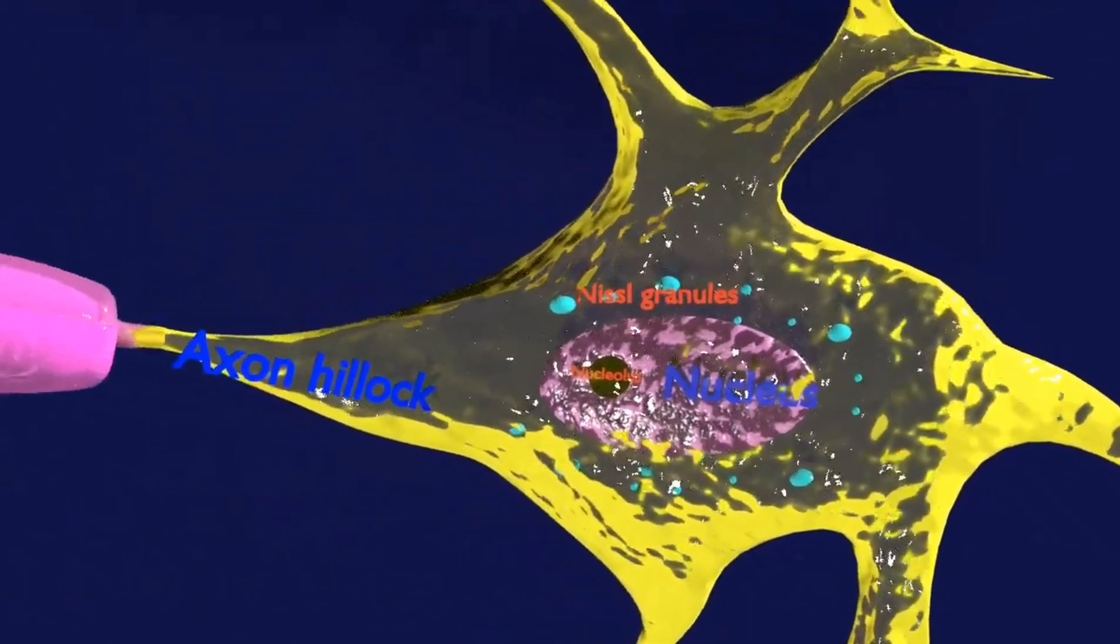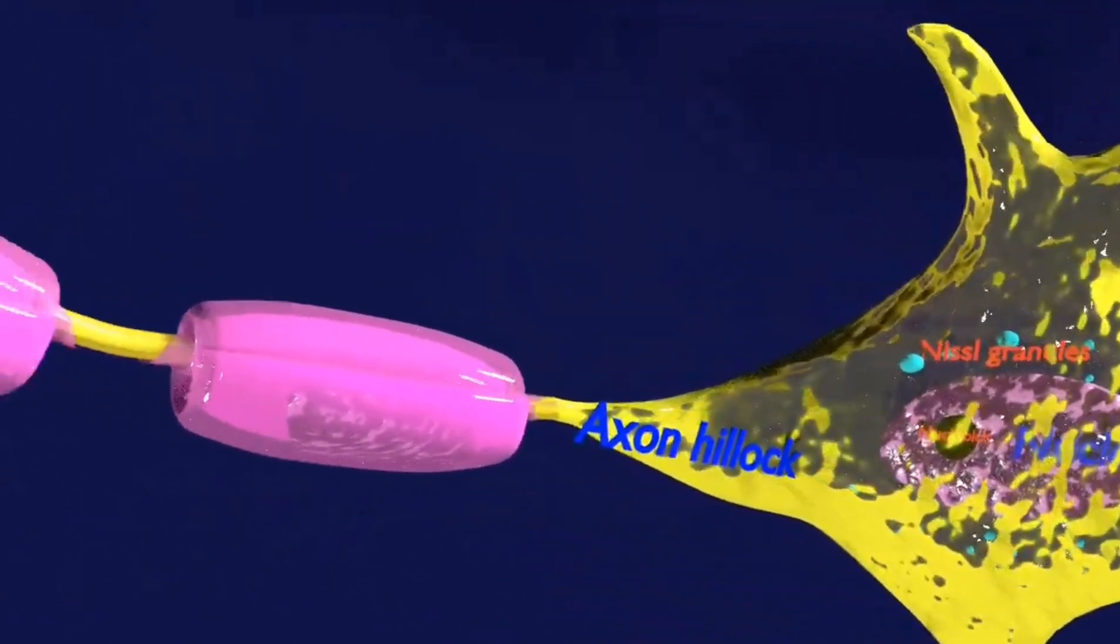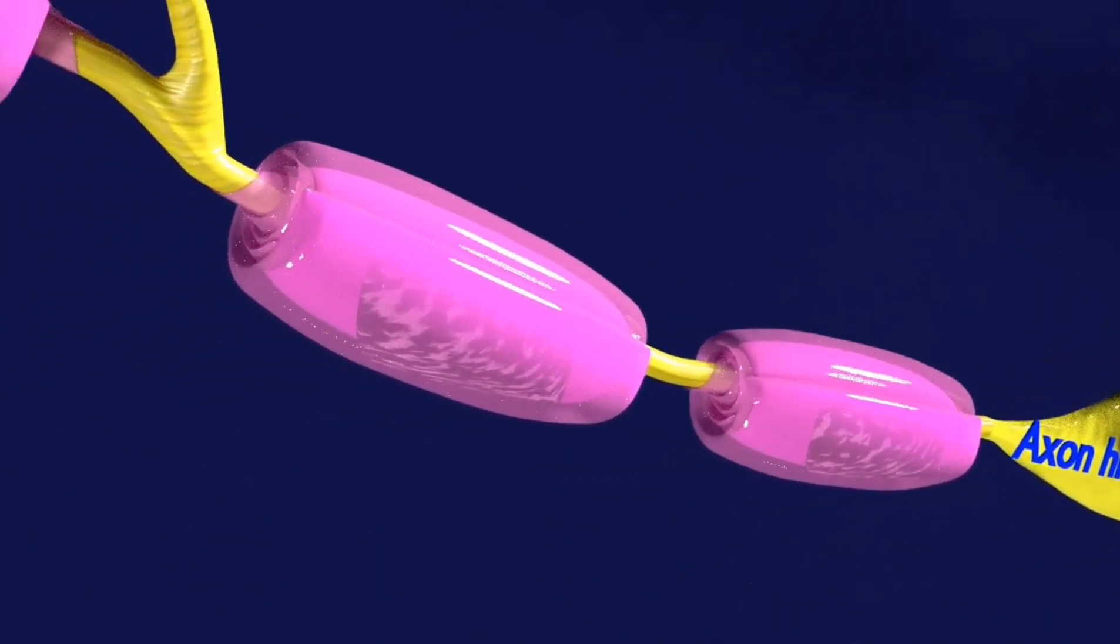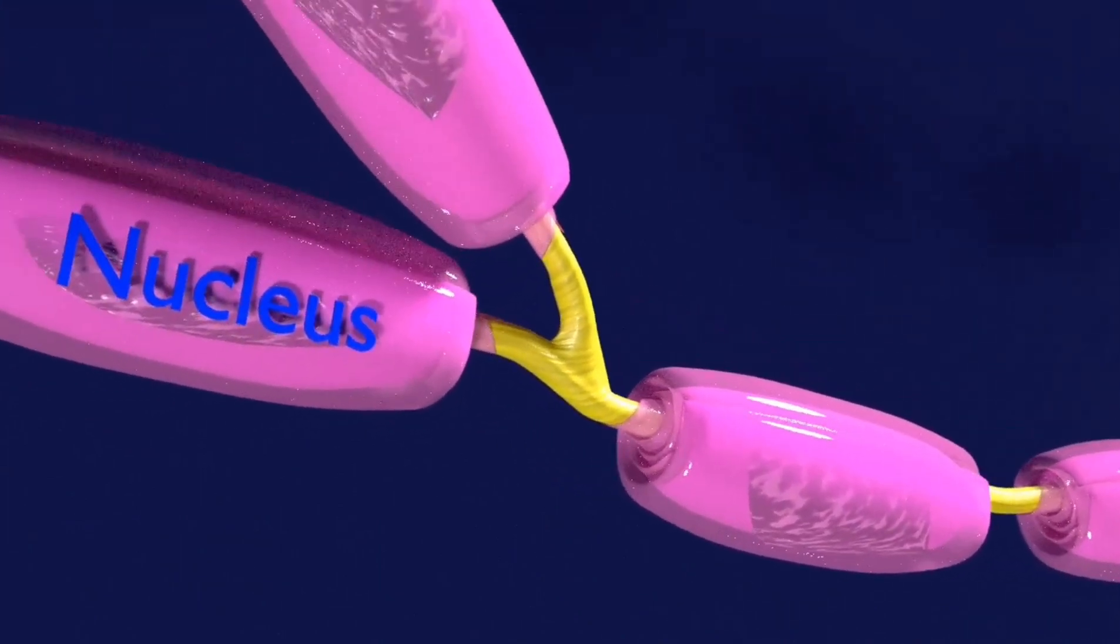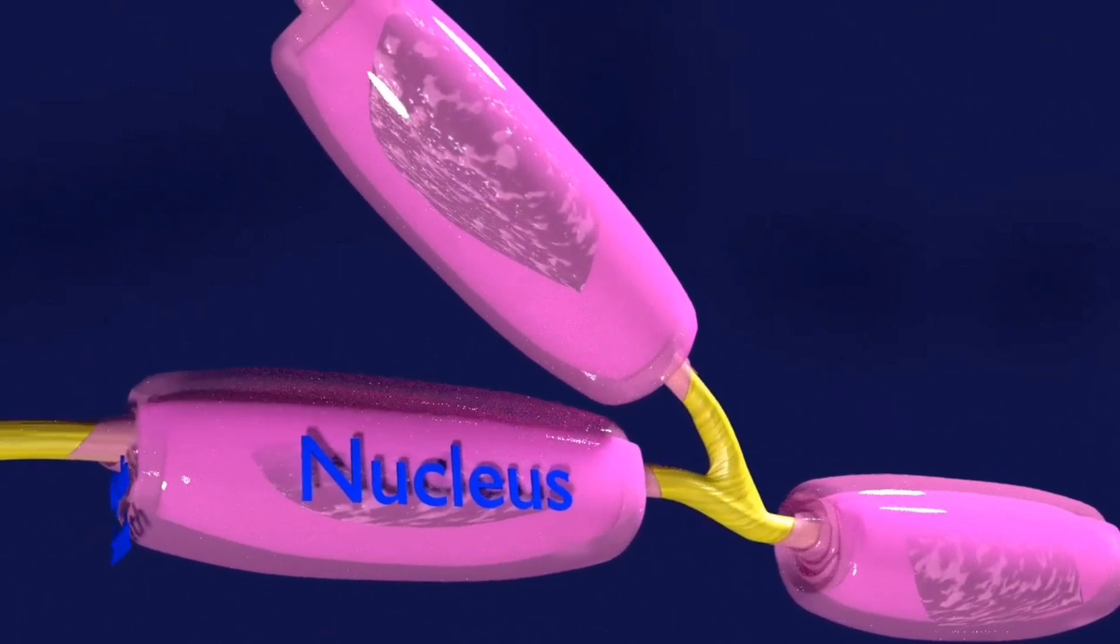The axon is a finer cable-like projection that can extend tens, hundreds, or even tens of thousands of times the diameter of the soma in length. The axon primarily carries nerve signals away from the soma.